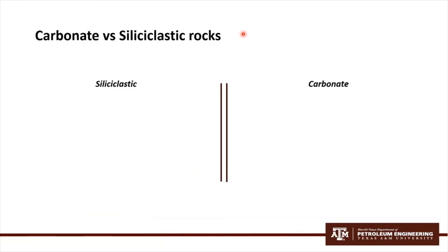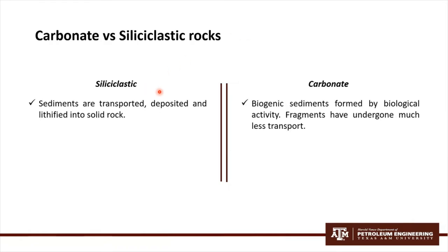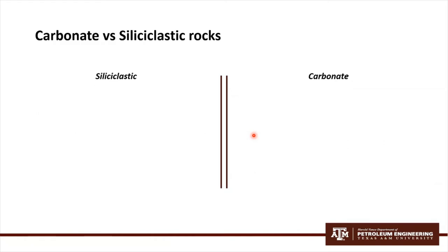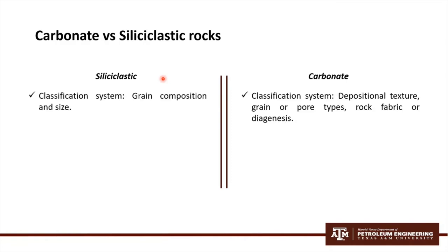Siliciclastic rocks are formed by sediments that are transported, deposited, and lithified into solid rock. On the other hand, carbonate rocks develop from biogenic sediments formed by biological activity, where fragments have undergone much less transport. Siliciclastic rocks contain a wide variety of minerals and particles, whereas carbonate rocks display a more limited group of minerals, predominantly calcite and dolomite. Both also present different classification systems: for siliciclastics, classification is mainly related to grain composition and size, while for carbonates it depends on positional texture, grain or pore types, rock fabric, or diagenesis.